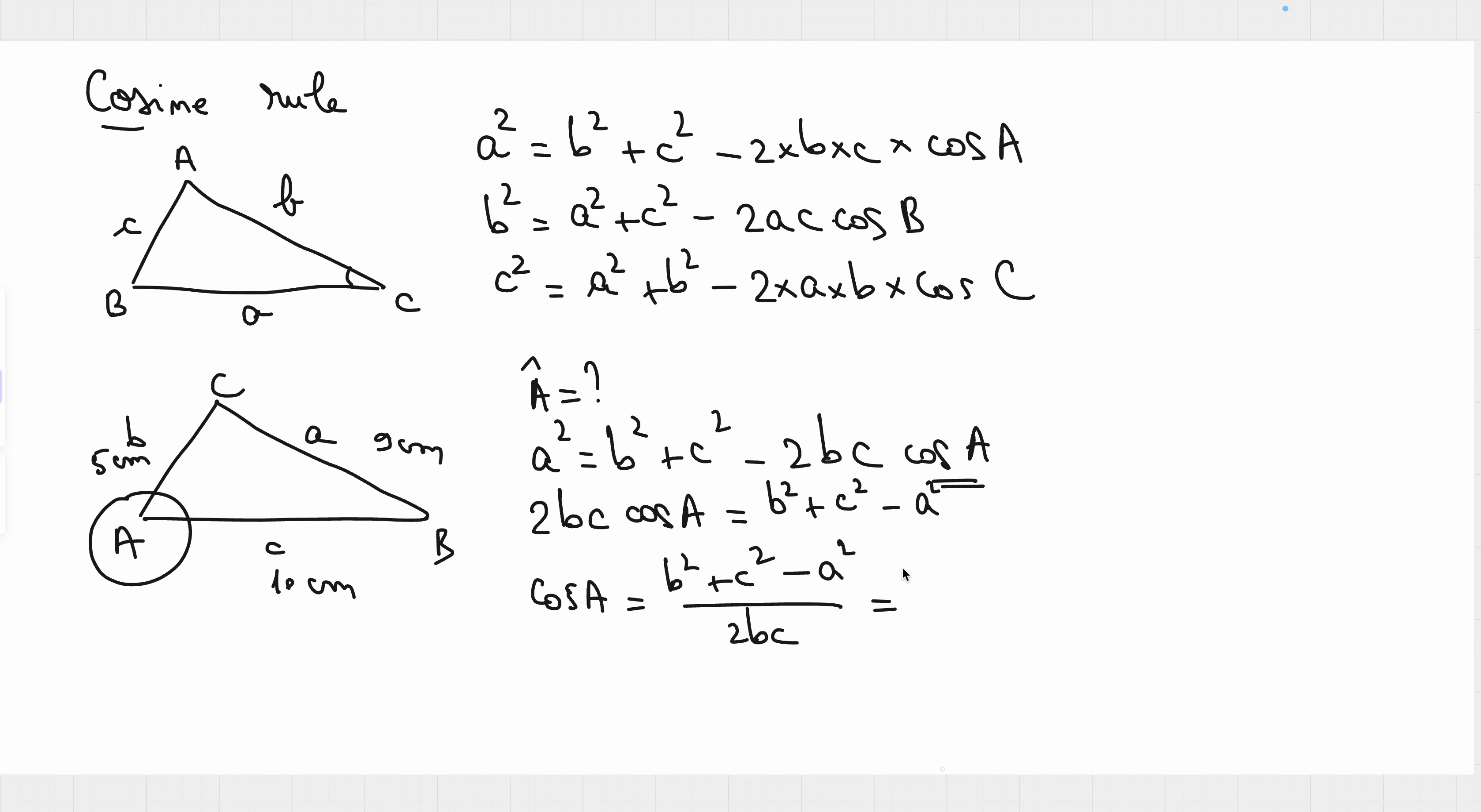So, we have b 5 centimeters, which means 5 centimeters squared, 25 plus c squared, 100 minus 9 squared, which is 81. Divided by, oh, you don't need the parentheses, I don't know why I put it, the bracket. I should delete it. Okay. Over 2 times b times c, which is 100. And if we do the computation, we'll get 44 over 100, which means 0.44.